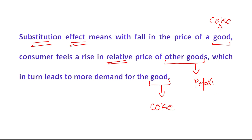Because there is an inverse relationship between the price of a good and quantity demanded, the substitution effect is one of the reasons behind the downward slope of the demand curve.